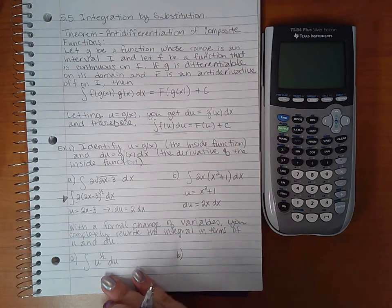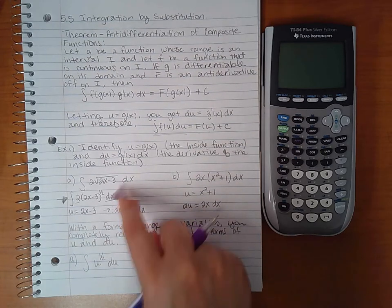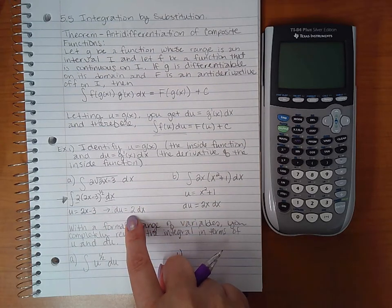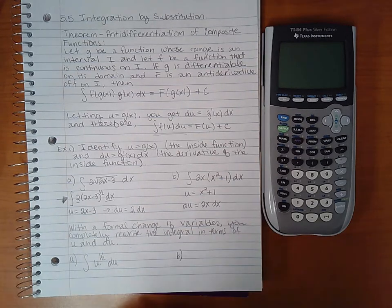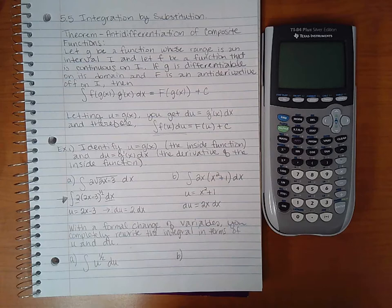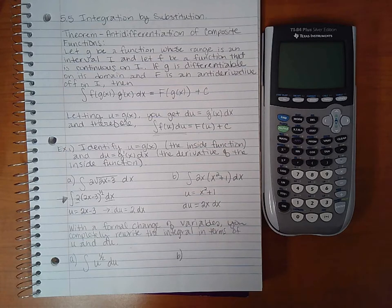Now if I wanted to integrate that I could, but that's not what they asked me to do in this particular problem. They just wanted me to change the variables. But this would be a second step that I would have to do to integrate this. If I wanted to integrate this, I would first have to identify my u and du, then I would have to substitute, then I could integrate, which would be the third step, and then I could back substitute, which would be the last step. Those will be in examples to come.